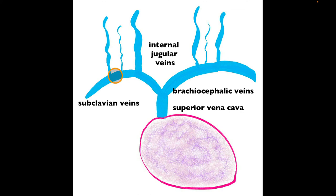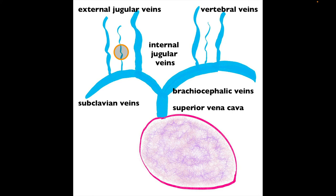Other blood vessels dropping oxygen-poor blood into the subclavian vein include the external jugular vein and the vertebral vein. The vertebral vein runs through the transverse foramina of the cervical vertebrae alongside the vertebral artery, which provides oxygen-rich blood up to the brain via the basilar artery into the circle of Willis. The vertebral vein, however, drains oxygen-poor blood from the vertebral column, not from the brain.